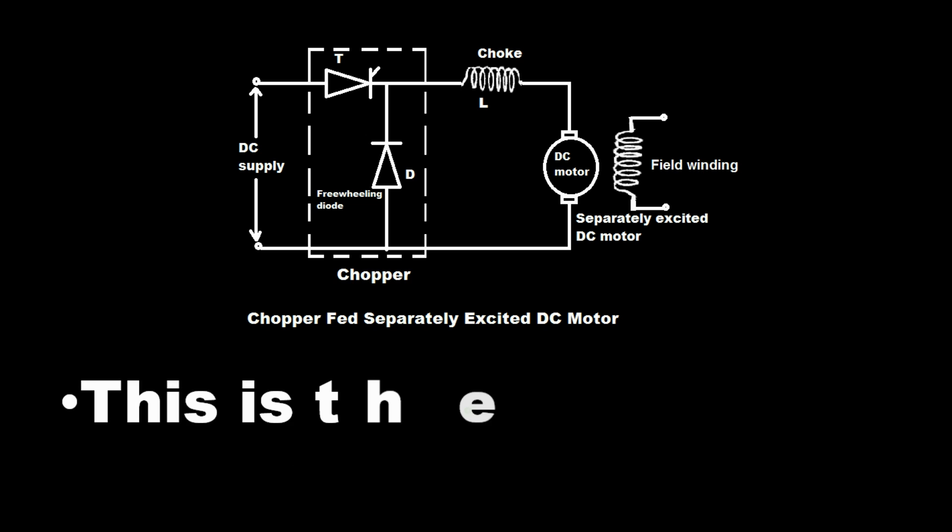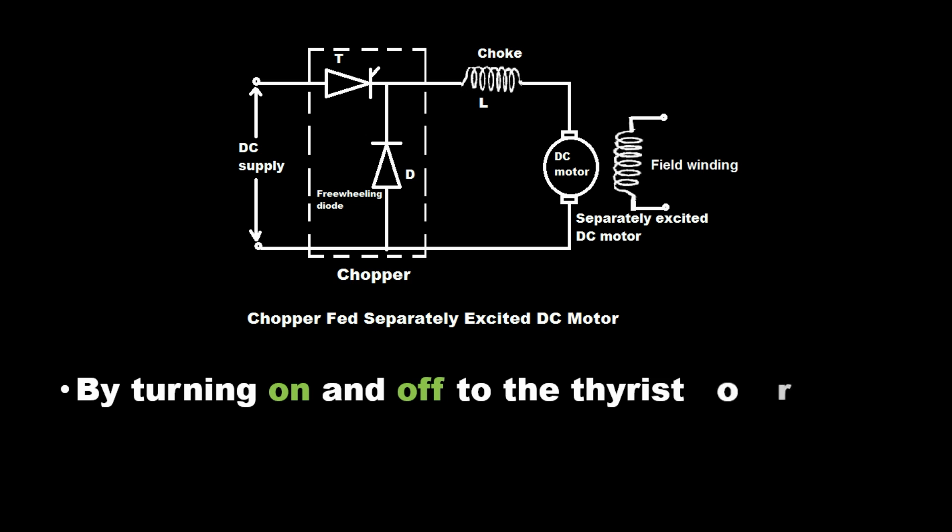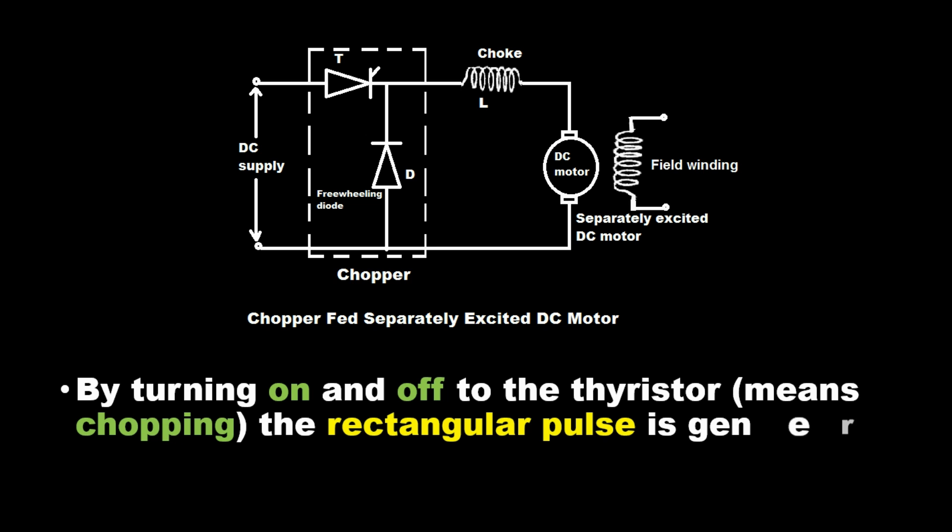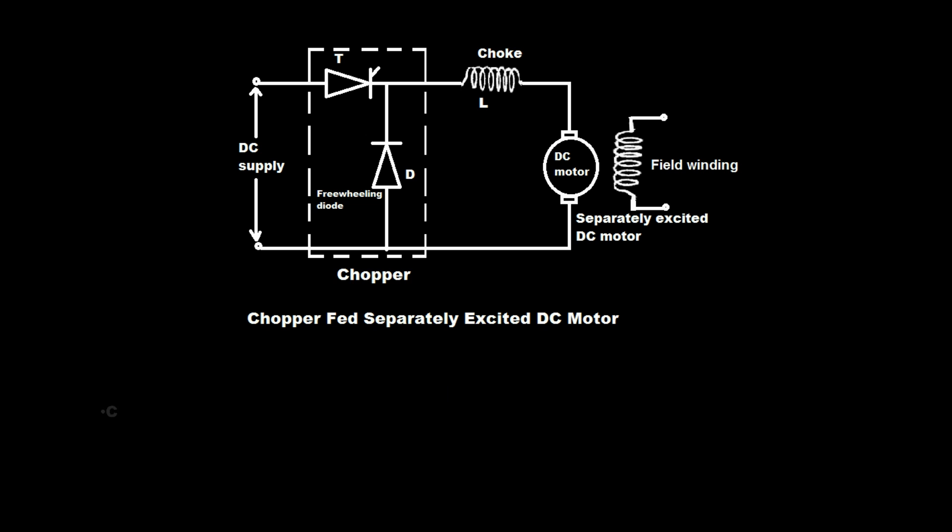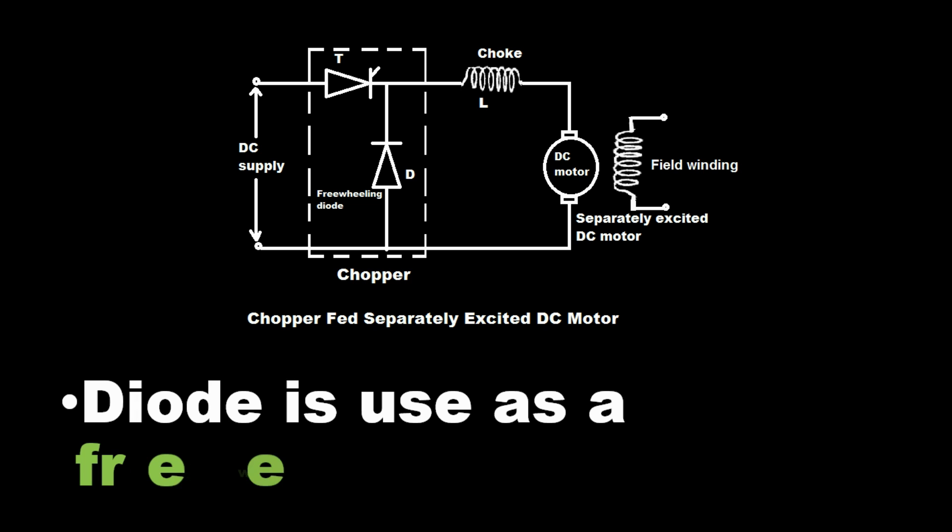This is the one quadrant drive. By turning on and off to the thyristor, means chopping, the rectangular pulse is generated which is fed to separately excited motor. Choke is for filtering. Diode is used as a freewheeling diode.